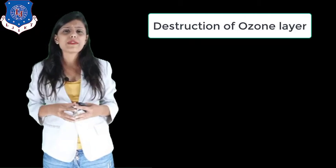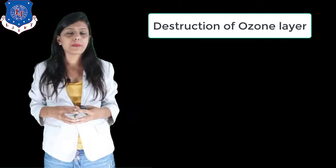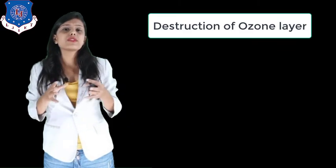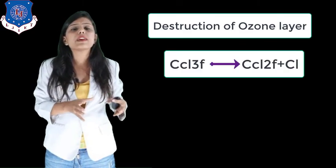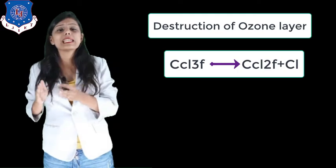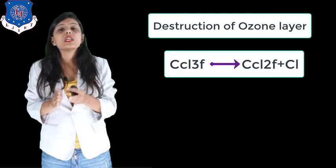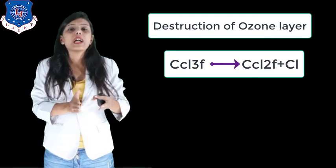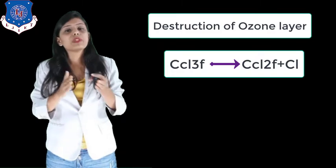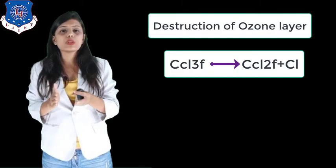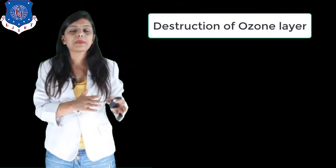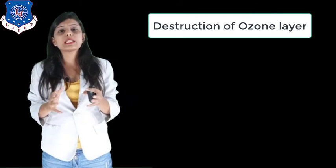Now how does CFC destroy the ozone layer? Ultraviolet radiation hits the CFC molecule. CCl3F is hit by ultraviolet rays and produces CCl2F plus Cl. This is the equation of CFC-11.